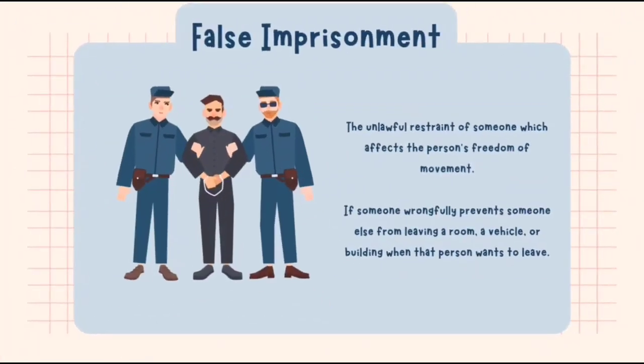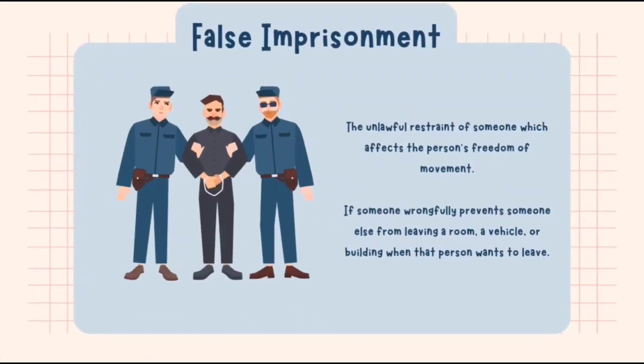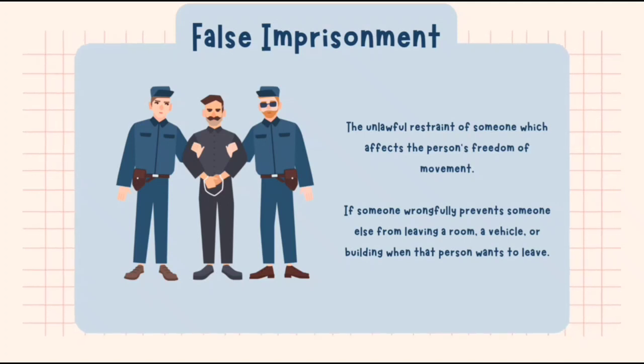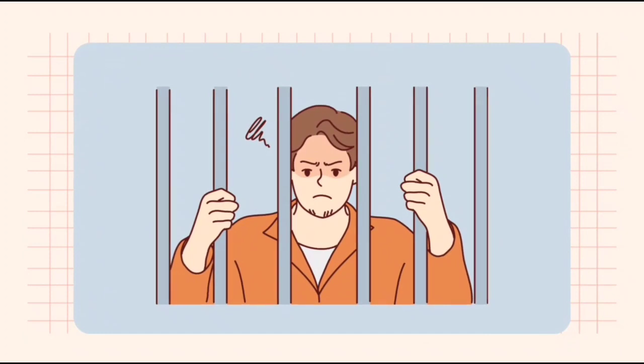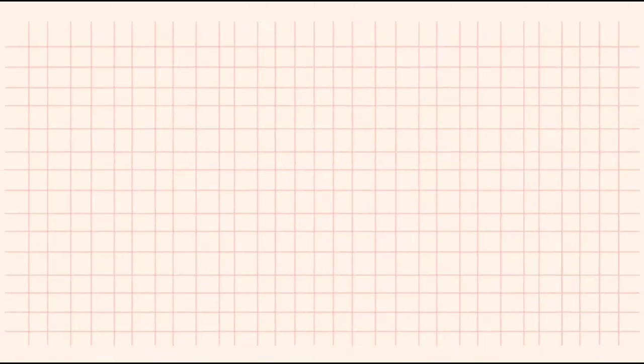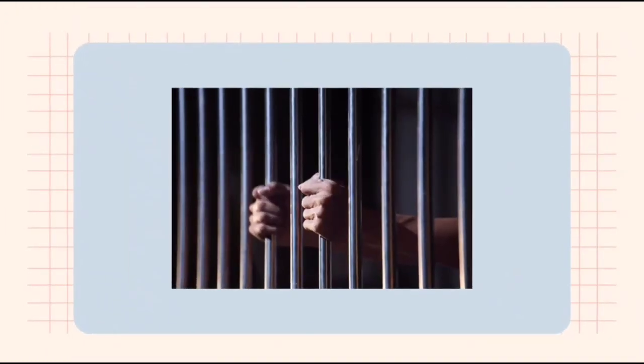The last one is false imprisonment: the unlawful restraint of someone which affects the person's freedom of movement. Both the threat of being physically restrained and actually being physically restrained are false imprisonment. If someone wrongfully prevents someone else from leaving a room, a vehicle, or a building when that person wants to leave, this is false imprisonment. It is a tort of strict liability and the plaintiff does not have to prove fault on the part of the defendant.